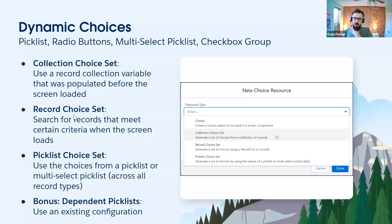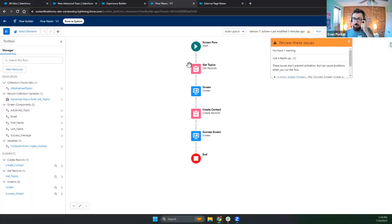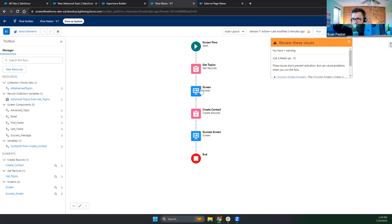Let's talk about another option: instead of using the collection choice set, you can use a record choice set. It's almost exactly the same, but you don't need to set up a Get Records beforehand. You can have a picklist question or a multi-select picklist question query for records at runtime — as the screen loads, it's going to run that query behind the scenes. It will retrieve any records that meet your criteria and use them as choices. That's handy if you don't need to use that collection anywhere else in your screen flow, and it helps simplify your flow canvas.